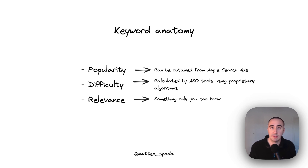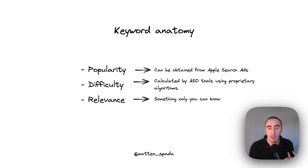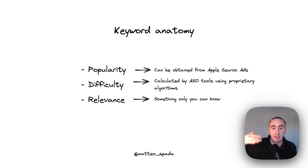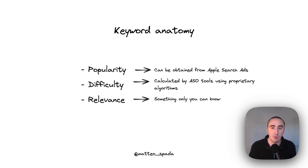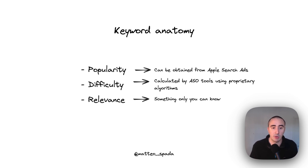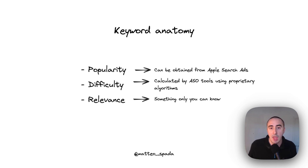But how can we choose the right keywords? We know that App Store Optimization is really important, that we need the right metadata, and that we need a lot of downloads to increase our ranking. The question now is: how do I find the right keywords to insert in my metadata? To understand which keywords we need, we need to understand the anatomy of a keyword. A keyword can be described using three properties: popularity, difficulty, and relevance. Popularity basically means how much a keyword is searched inside the Apple App Store.